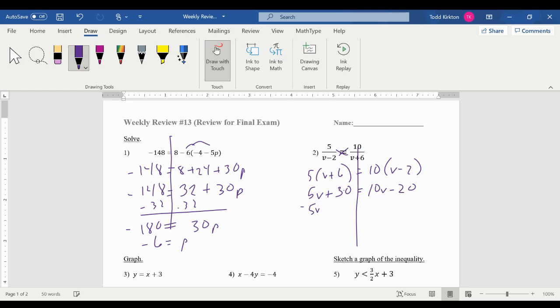5v plus 30 equals 10v minus 20. I'm going to move the v's to one side and the numbers to the other. 5v equals 50, so v equals 10.